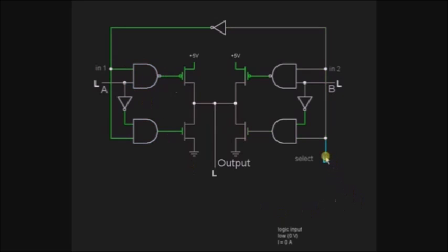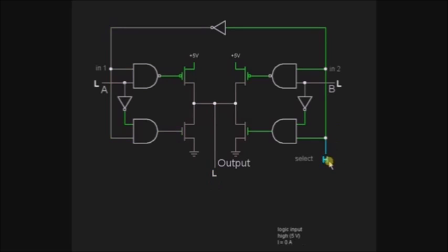If the selection line is low, then A is selected for the output. If the selection line is high, then B is selected and the output will be connected with B.